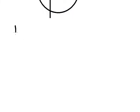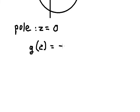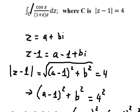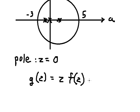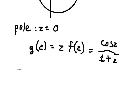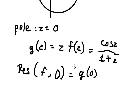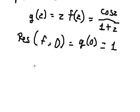For the first pole at z equals zero, we compute the residue using g(z) equals z multiplied by f(z), where f(z) is the function. So if we multiply by z we have cosine z over (one plus z). After we have this, we can find the residue of f at z equals zero, so we put zero in here and we get number one.